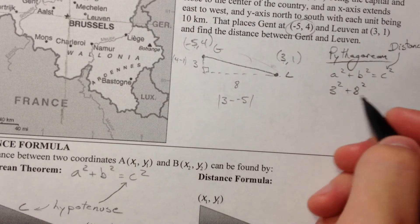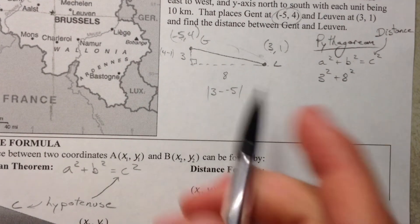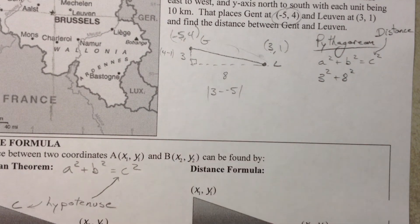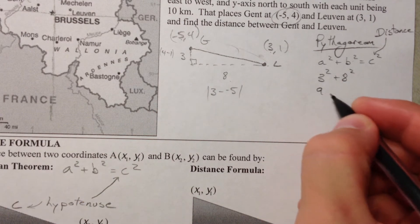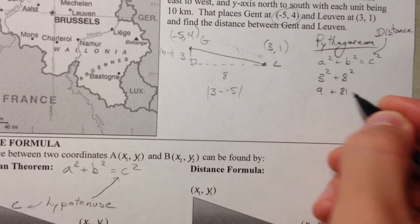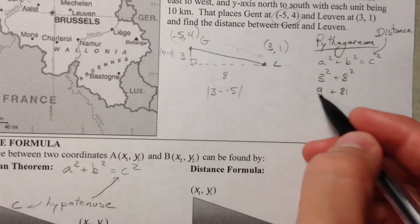And notice that it doesn't matter which one goes where. It doesn't matter that this triangle looks exactly the same as that one. I could have done 8 squared plus 3 squared. Because 9 plus 81 is the same thing as 81 plus 9.